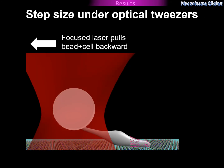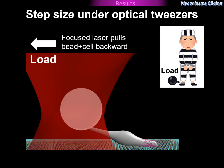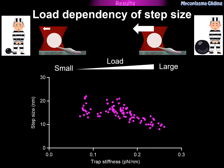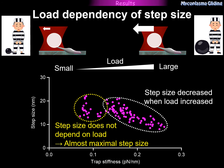We analyzed the step size under optical tweezers. The cell is bound to a bead captured by the focused laser; when the cell moves forward one step, it is pulled backward by the laser, experiencing a load — like a prisoner connected to an iron ball. To check the load dependency of step size, we performed measurements over a wide range of loads. At higher loads (white circle region), step size decreased as load increased. However, at lower loads (yellow circle region), step size did not depend on load, indicating this represents the maximum step size. The average step size of 21 steps was 16.2 nm.